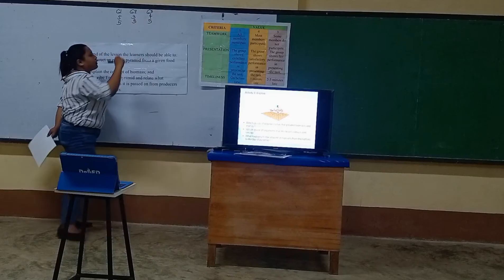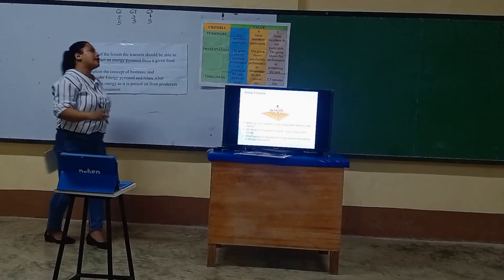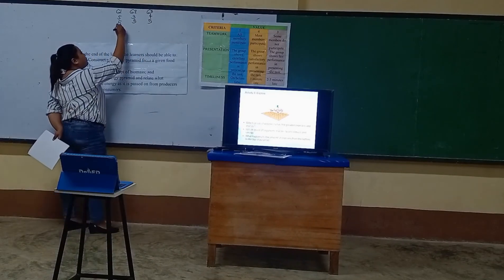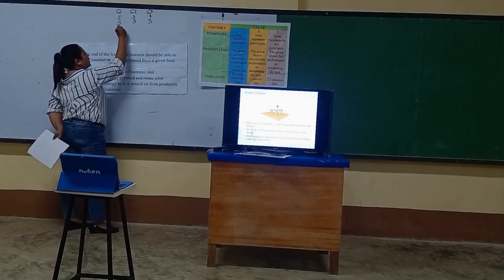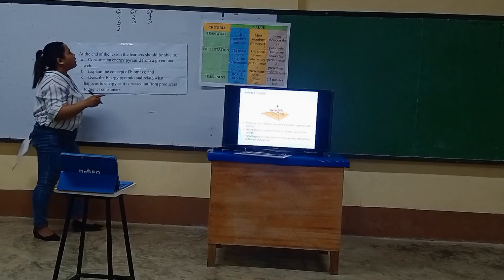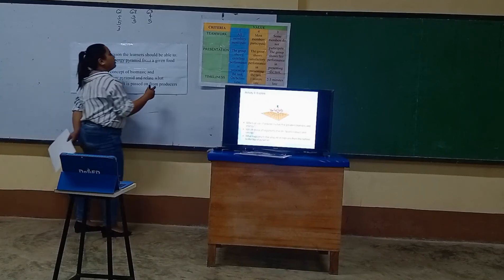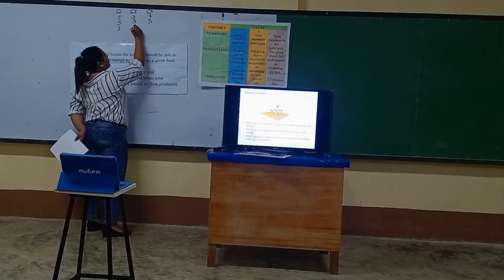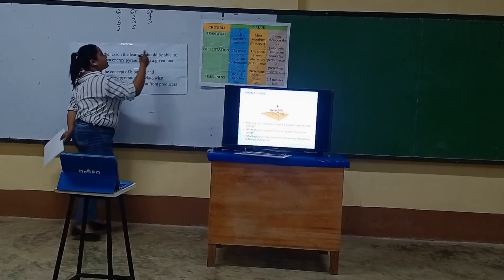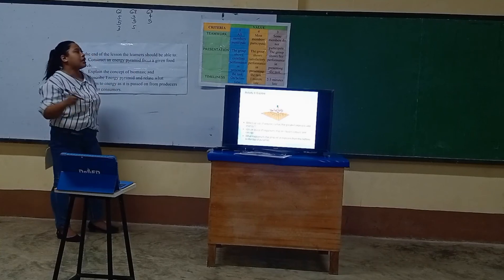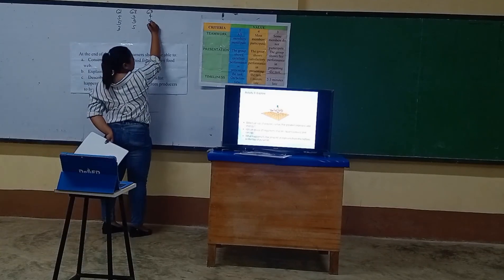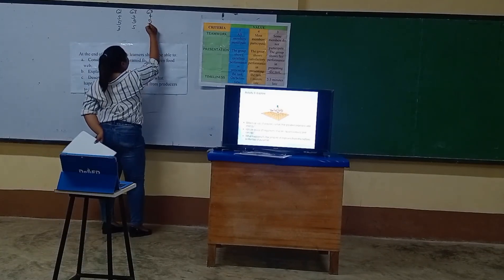Next, for the reporting scores — since all the group reporters did their work well, I will give five points to each group. For timeliness: group one was two minutes late, so I will only give them three points. Group two was on time, so I will give them five points. Group three walked in late, so I will give them four points.